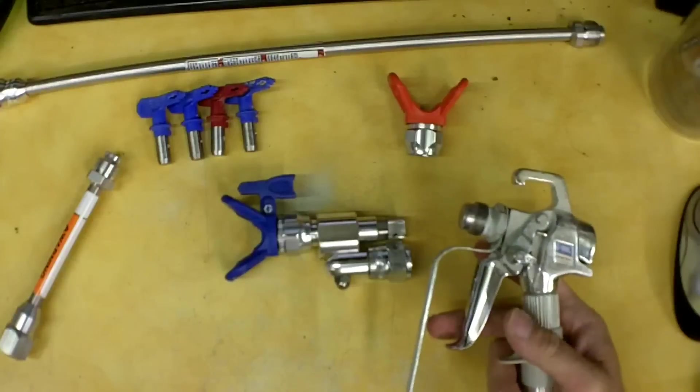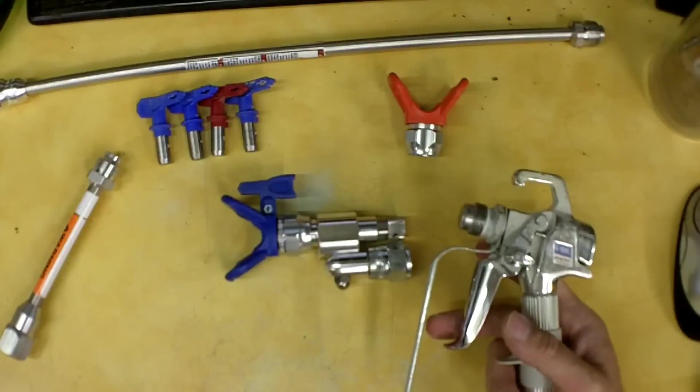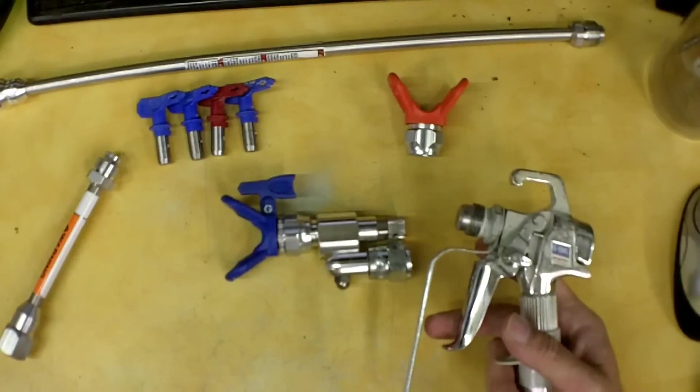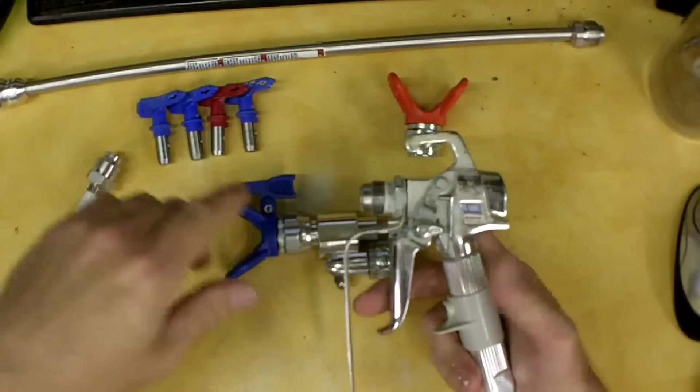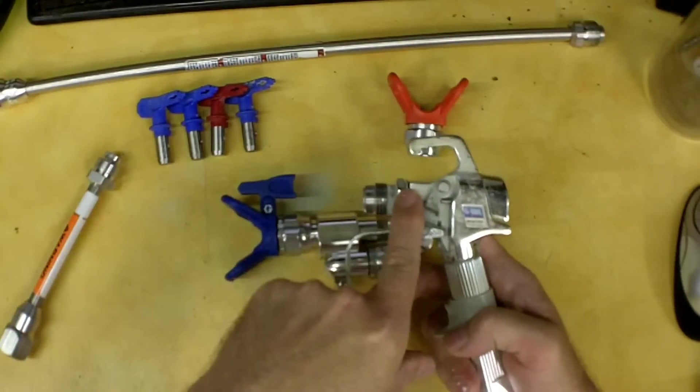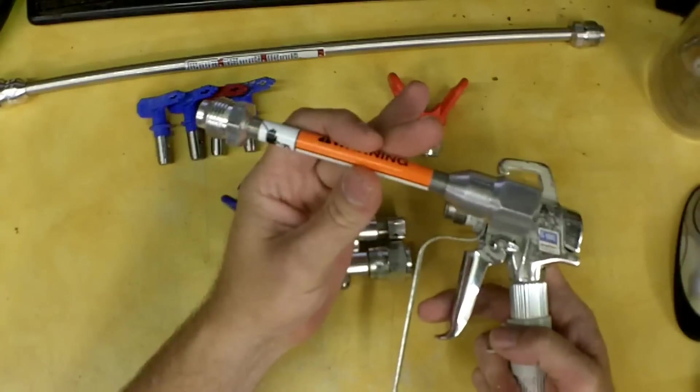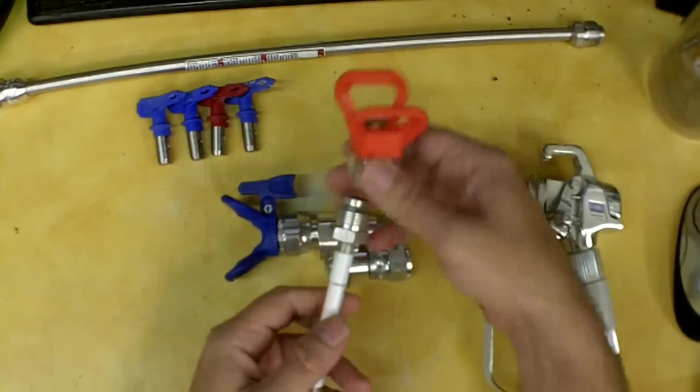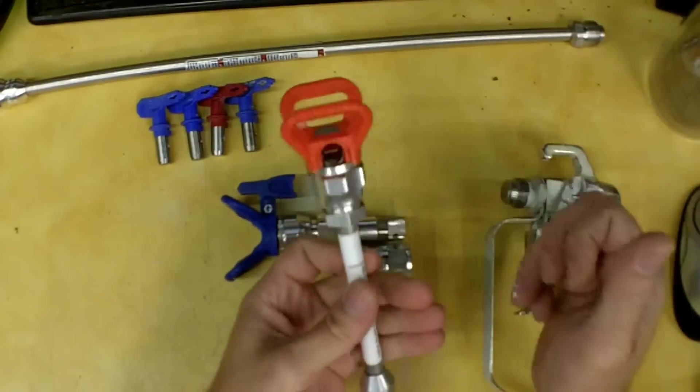What happens is when you're using an extension, they'll have a tendency to spit at the beginning and at the end of pulling the trigger, because the cut-off for the paint is back here. But you still have all the pressure in here and it leaks out your tip at the front.